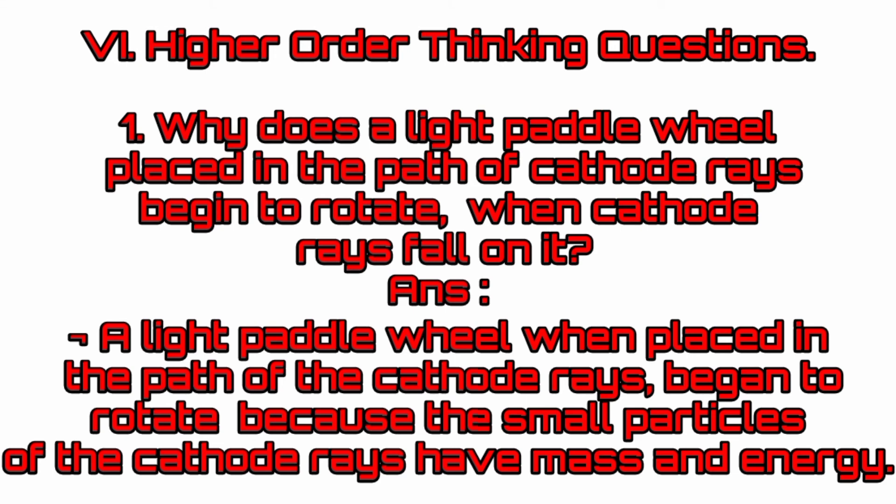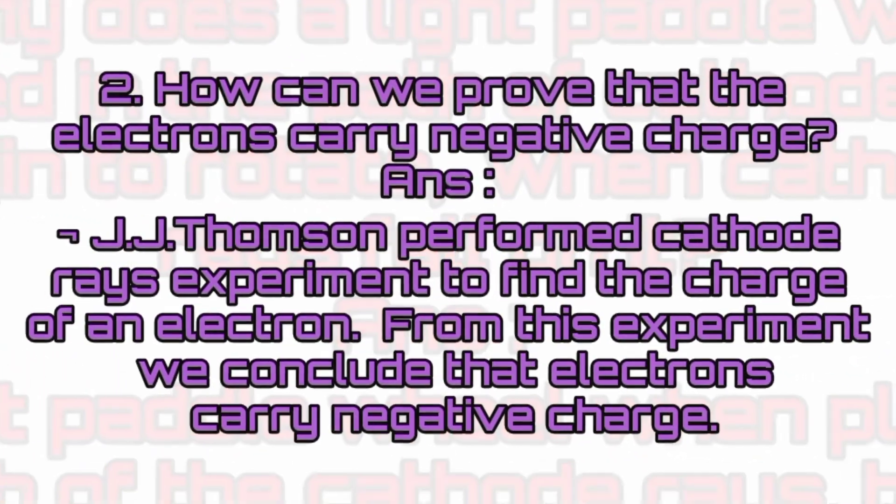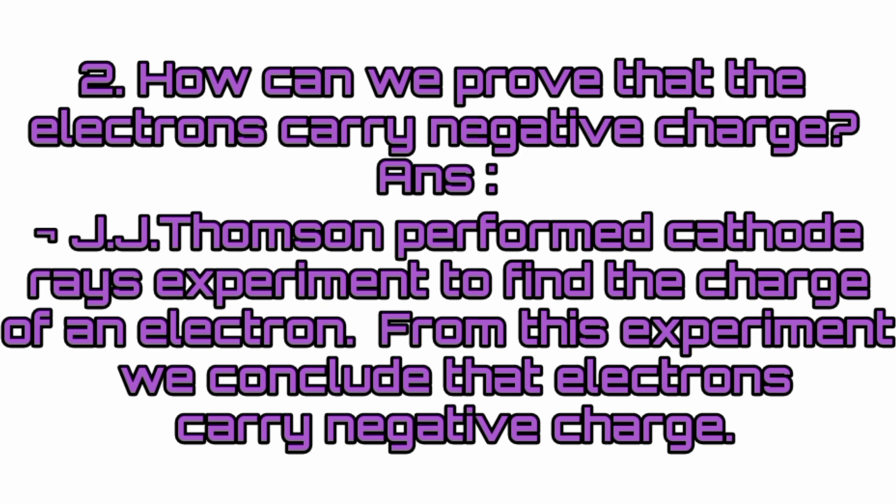Higher order thinking questions. Why does a light paddle wheel placed in the path of cathode rays begin to rotate when cathode rays fall on it? Answer: A light paddle wheel, when placed in the path of cathode rays, begins to rotate because the small particles of the cathode rays have mass and energy. How can we prove that electrons carry negative charge? Answer: J.J. Thomson performed the cathode ray experiment to find the charge of an electron. From this experiment, we conclude that electrons carry negative charge.